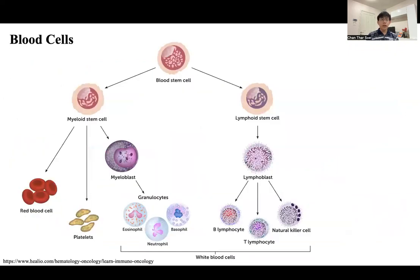Let's look closely at the blood cell. We have one main stem cell. The differentiation of this stem cell gives us the myeloid stem cell and the lymphoid stem cell. From the myeloid stem cells, we get the red blood cells, platelets, and granulocytes. From the lymphoid stem cell, we have the lymphoblasts. At the bottom, we have white blood cells, platelets, and red blood cells.